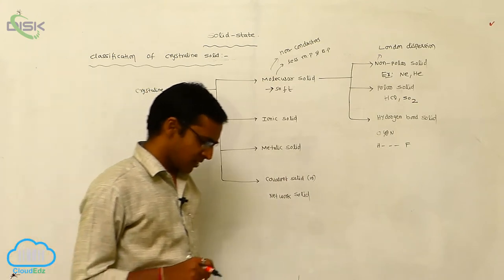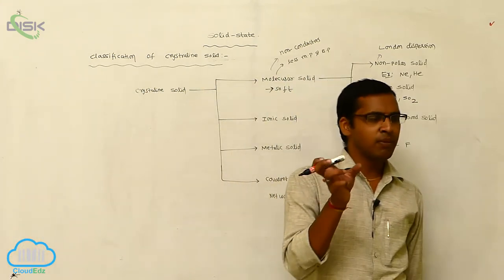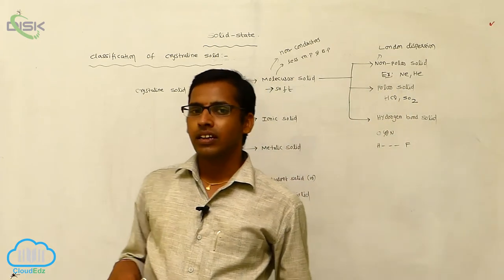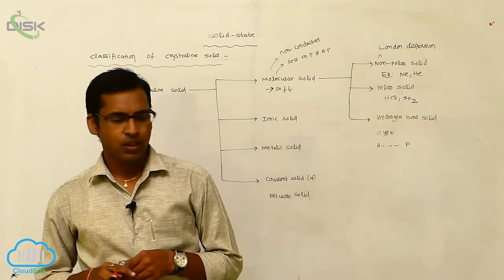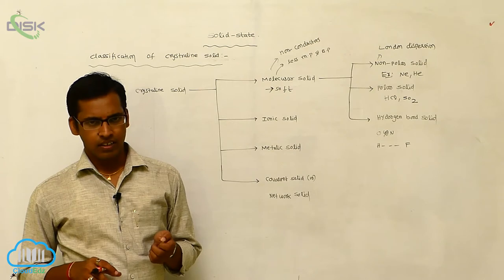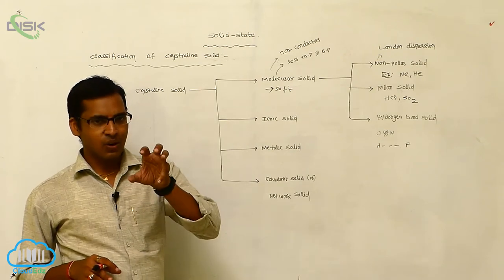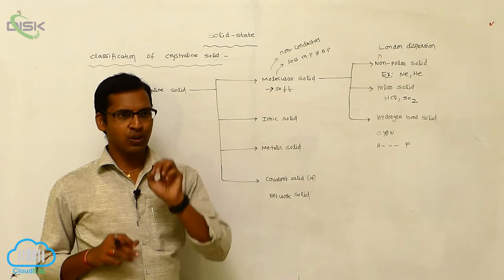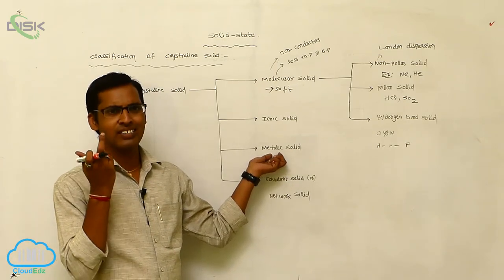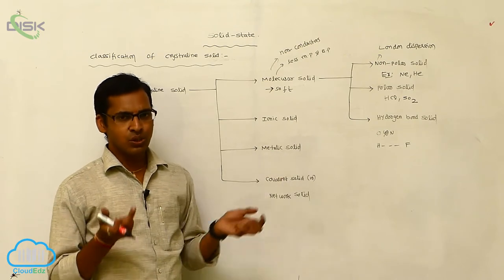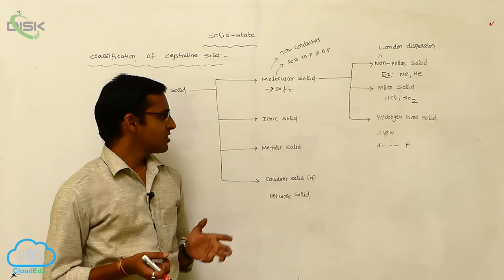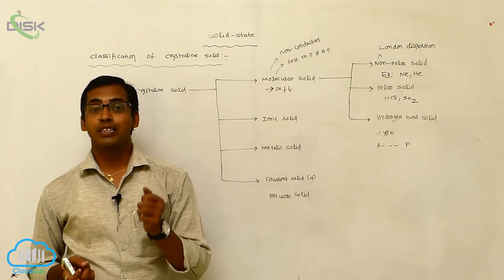In metallic solids, metallic bonds are present between the atoms or ions. Metallic solids are very hard substances. The electrons are surrounded around the nucleus in a sea of electrons — that is, delocalized electrons are freely moving. Due to the presence of delocalized electrons, metallic solids exhibit conductance properties.